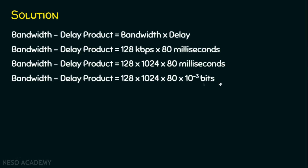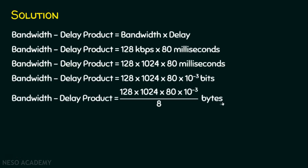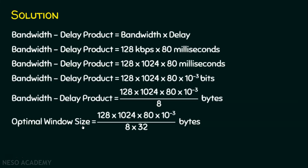We need to convert this result into bytes because the packet size is 32 bytes. To convert from bits to bytes, we divide by 8. Now the bandwidth-delay product is in bytes. Since the packet size is 32 bytes, we divide by 32 to get the optimal window size. Simplifying this expression gives us 40.